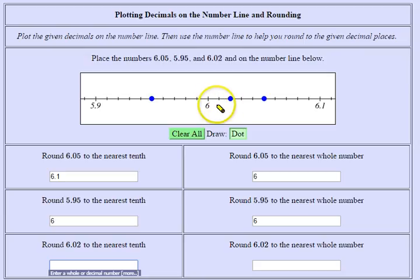It's 2 hundredths away from 6 and 0 tenths and 8 hundredths away from 6 and 1 tenth. So we would round to 6, and you could put 6.0 or just 6.